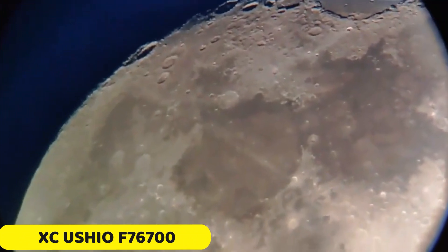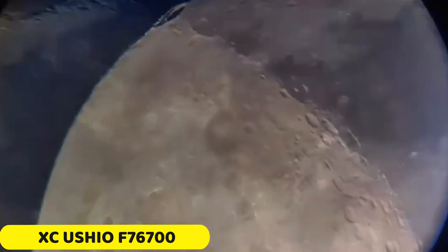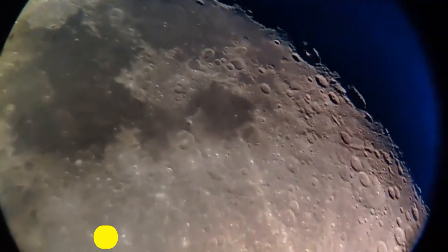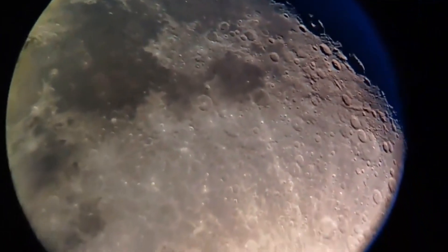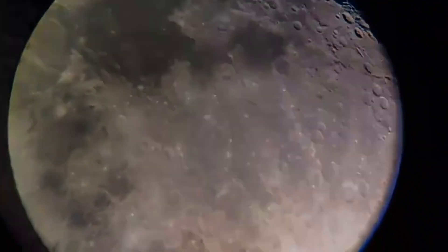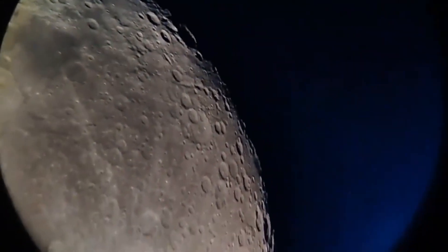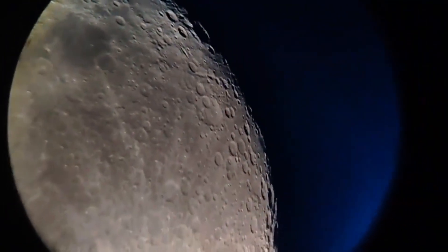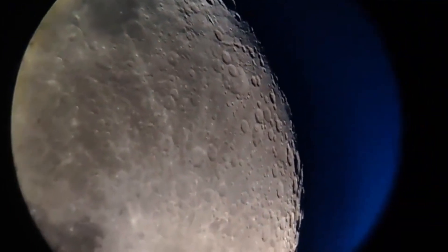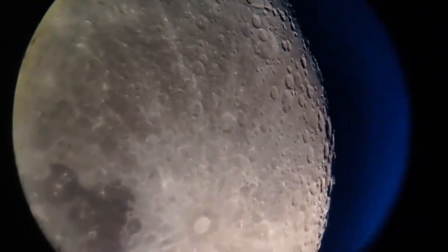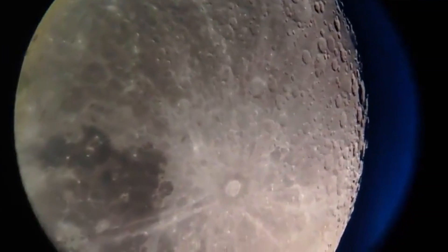Number 5. XCSEO F76700 Astronomical Telescope. The XCSEO F76700 Astronomical Telescope is a powerful and versatile instrument suitable for both amateur and seasoned astronomers. Its large aperture and f9.21 focal ratio ensure excellent light gathering, allowing for clear and detailed celestial observations.